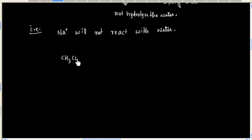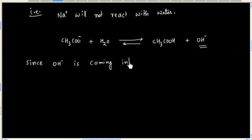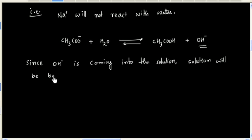Let us write the reaction for the acetate ion with water. Here, it will form acetic acid and OH⁻ will be released. Since OH⁻ is coming into the solution, the solution will be basic — that is, pH is greater than 7.